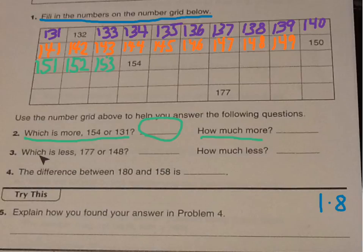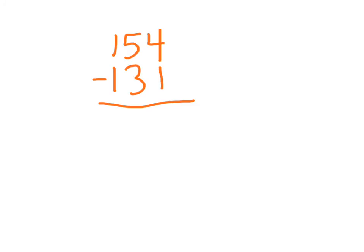And to do three and four you use the same method, so which is less, hopefully you can figure that out, and then how much less, use your number grid to figure out the difference between those two numbers, and then check it by subtracting and making sure your answer is correct.